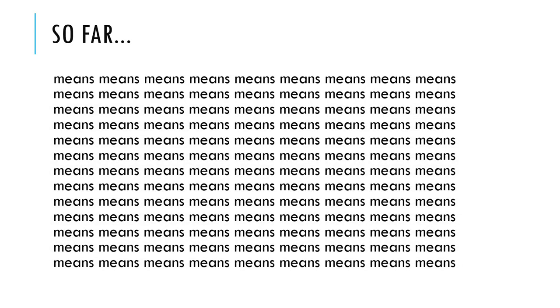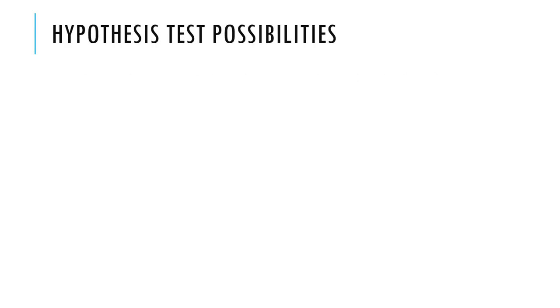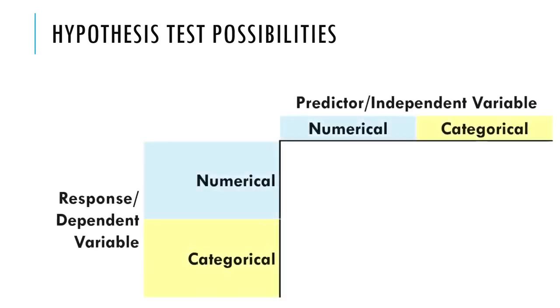So far it's been means, but now we need to expand our horizons a bit. There are many different hypothesis test possibilities — here are probably the bulk of them. If you categorize the different kinds of hypothesis tests or inferential procedures based on whether each of the two variables involved is numerical or categorical, then you kind of get a two-by-two table.